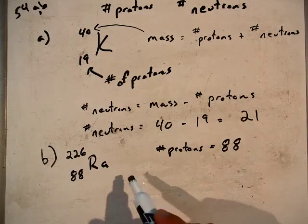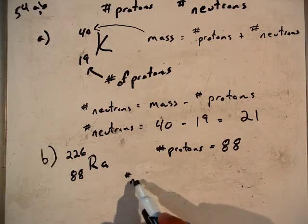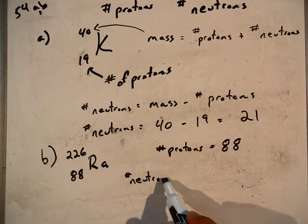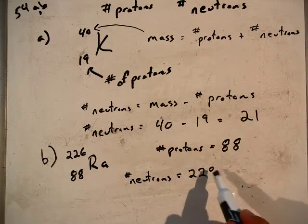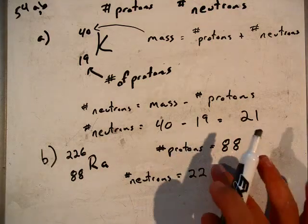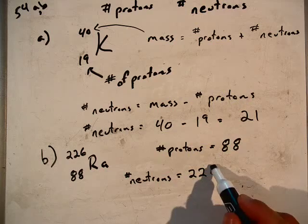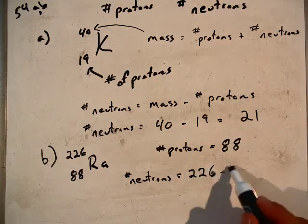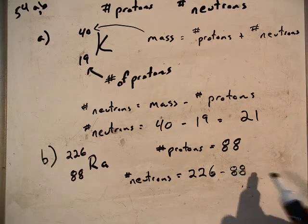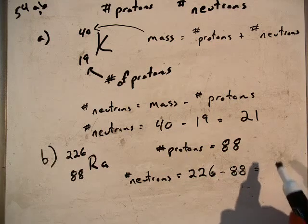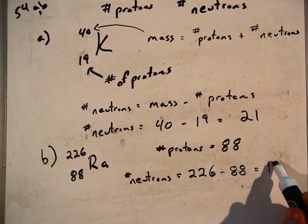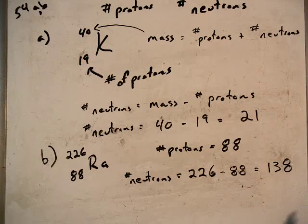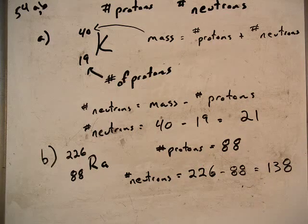And then to figure out how many neutrons we have, we just need to subtract the mass of the isotope from our number of protons. And we get a number of neutrons to be equal to 138.